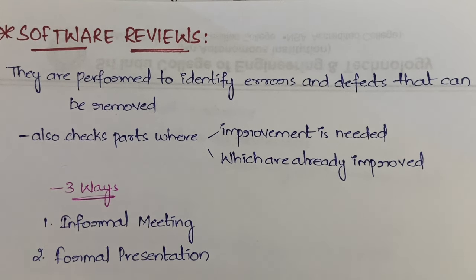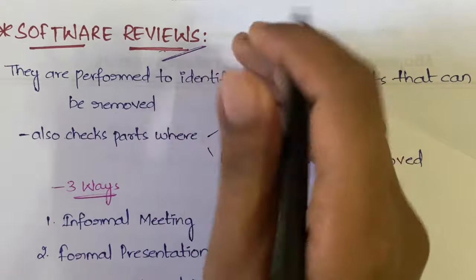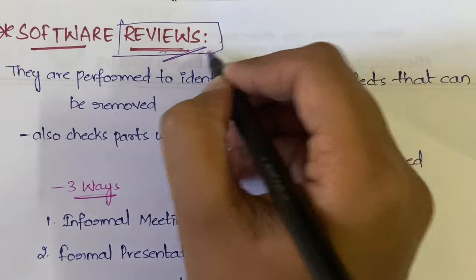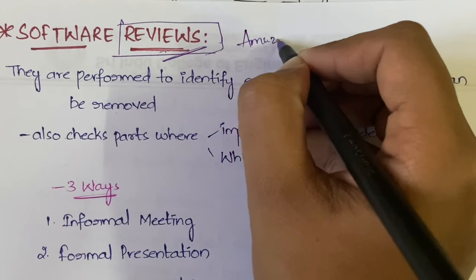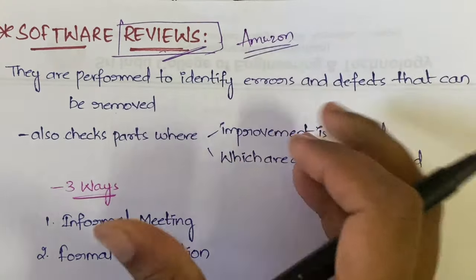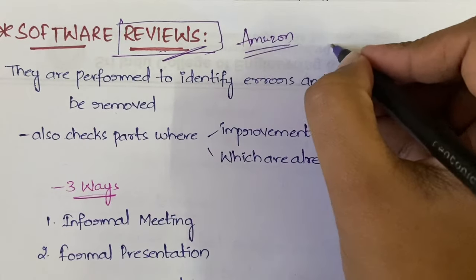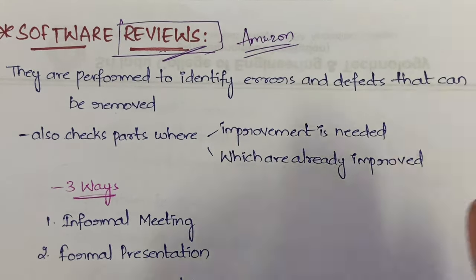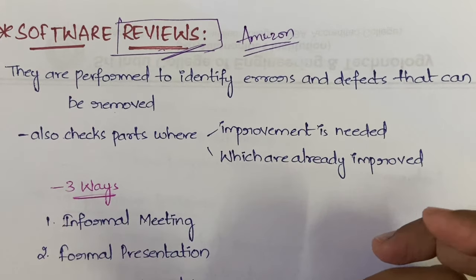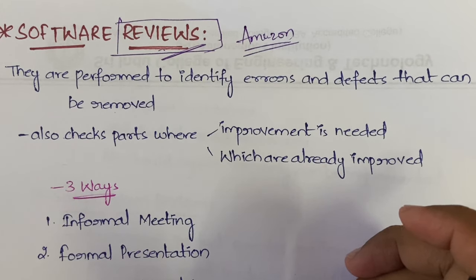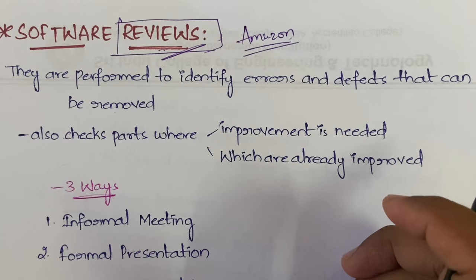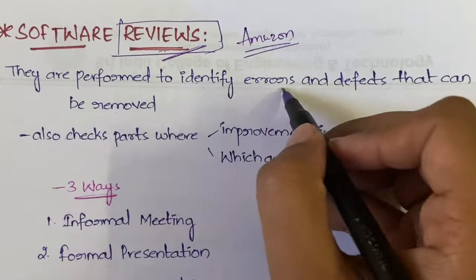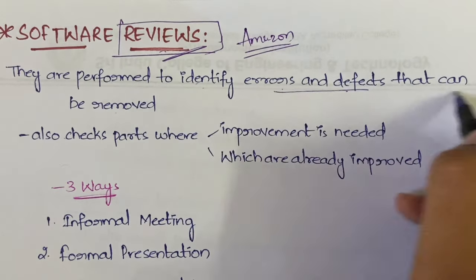First, why do we have to do software review? What do you mean by review? On Amazon, when you purchase something you give a review — after using the product, how you feel about it, whether it is working properly, whether it is serving the purpose for which you bought it. Here we do the same thing. Reviews are performed to identify the errors and defects that can be removed.